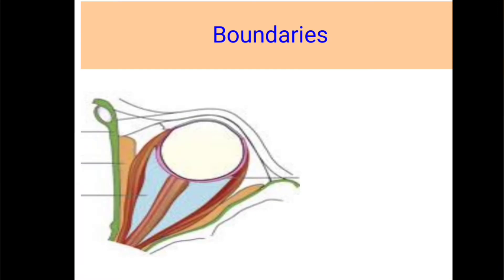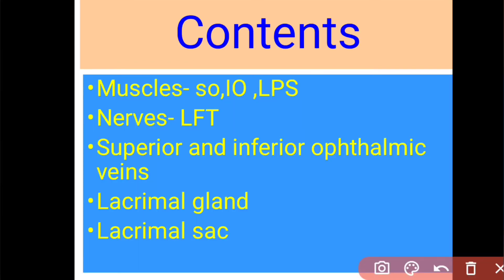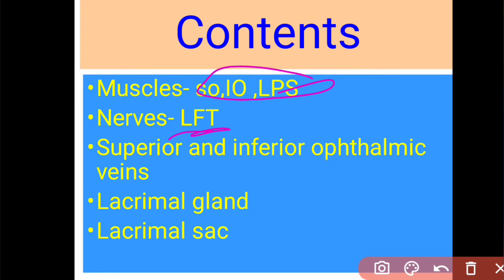Coming to the peripheral space. The boundaries: peripherally we have the periorbita; on the inside, the extraocular muscles with the intermuscular septum; anteriorly, the orbital septum, the tarsal plate and the tarsal ligament; and posteriorly, it can merge with the central space. The contents include three muscles — superior oblique, inferior oblique, and the levator palpebrae superioris. The nerves are the lacrimal nerve, frontal nerve, and trochlear nerve, along with the superior and inferior ophthalmic veins, the lacrimal gland, and the lacrimal sac.